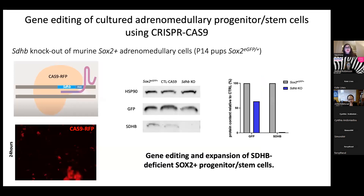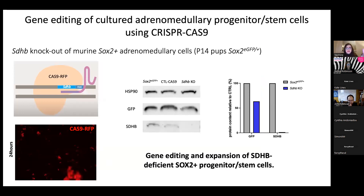To investigate their oncogenic potential, we can now genetically edit these cells and delete SDHB specifically by first isolating them in culture, then performing CRISPR-Cas9 to successfully delete SDHB. We can then test whether these cells behave as cancer stem cells and aggressively invade the chick after a CAM assay.